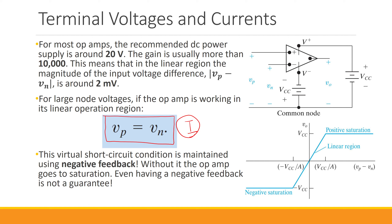In other words, you can say these two nodes are virtually short-circuited — it looks as if they are connected, even though they are not connected in reality. But because of the condition for the op-amp, they behave as if they are connected.